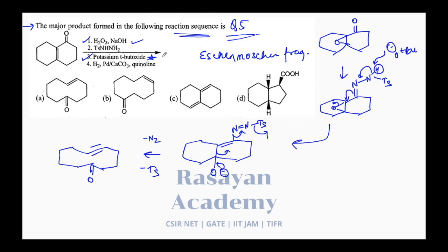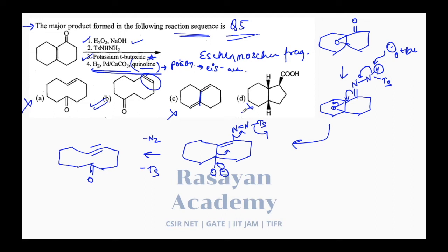Does the reaction stop there? No. The fourth step uses H₂/Pd/CaCO₃ with quinoline — that is Lindlar's catalyst, where the catalyst is poisoned to stop the reaction at the alkene stage. Lindlar's catalyst gives alkyne reduction to cis-alkene. Your answer is option B: a cis-alkene. A is wrong; C is wrong because fragmentation has not happened; D does not make sense. Counting confirms: 1, 2, 3, 4, 5 — you get a cis-alkene as the major product.